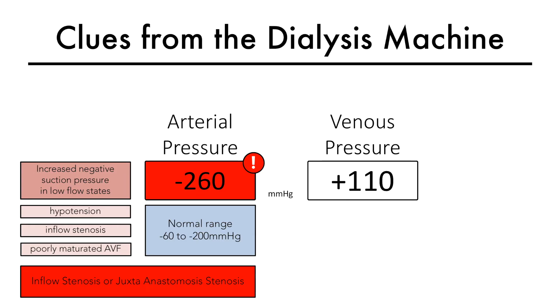Excessively negative arterial pressure is often the finding in juxta-anastomotic stenosis as well, since this type of stenosis causes axis hyperperfusion and diminished inflow.